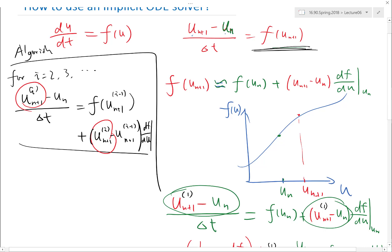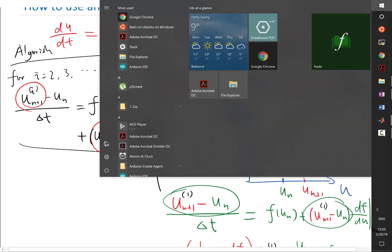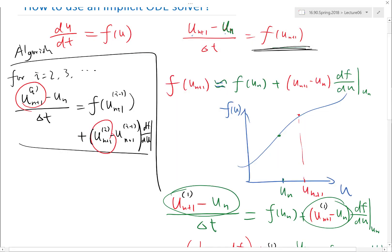And if you fail, just cut the time step. Okay, almost out of time. So how do we do the same thing for a system of ODEs?